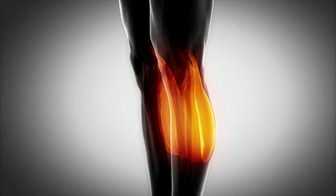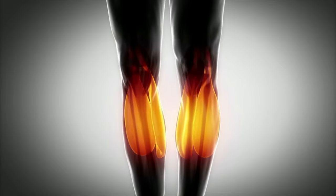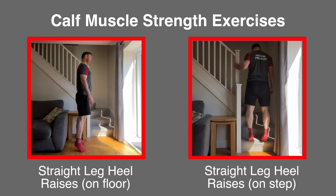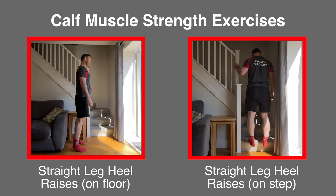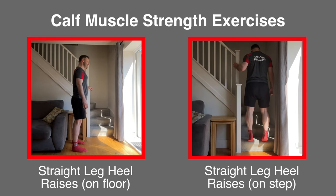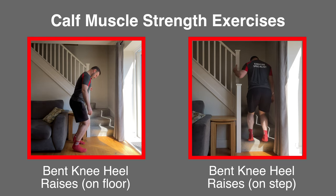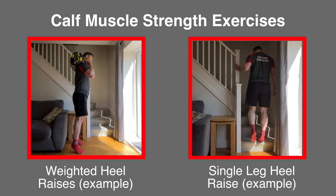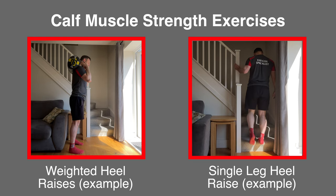The calf muscles should also be strengthened as they can help reduce the load placed on the ACL. Heel raises either on the floor or on the edge of a step is a great basic exercise. You can also try this ankle movement with your knees bent to target the soleus muscle. Maintain three sets of 10 reps, and you can progress the intensity by adding weight or changing to a single-leg variation on the affected leg.